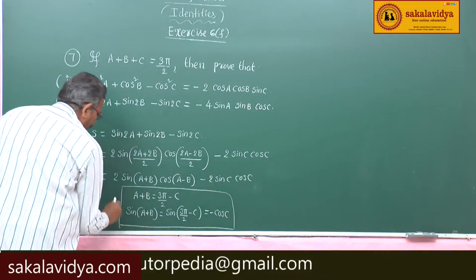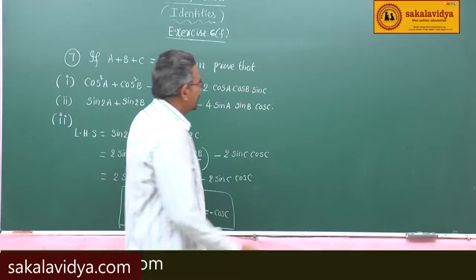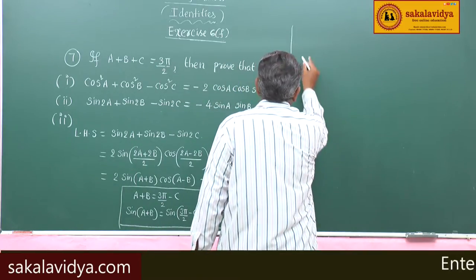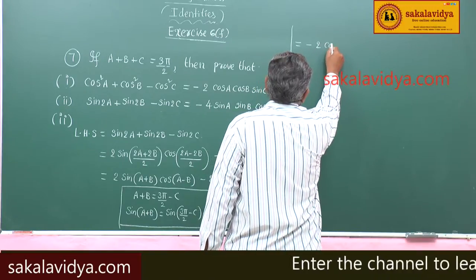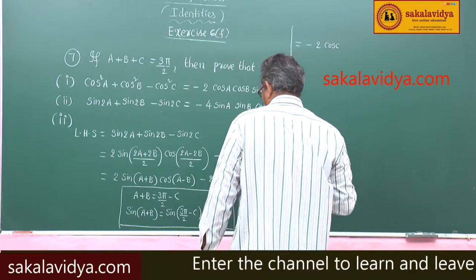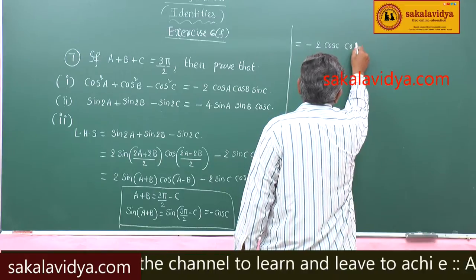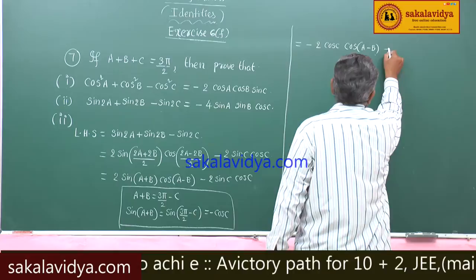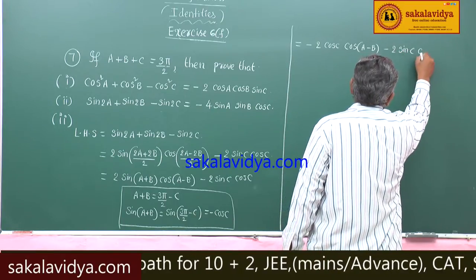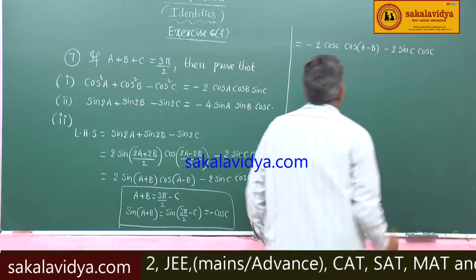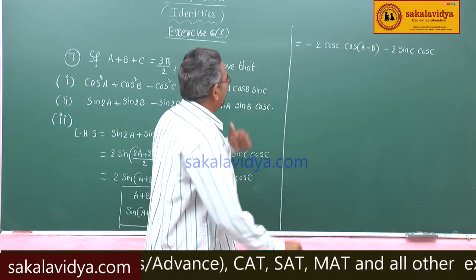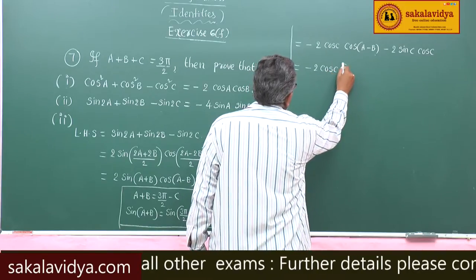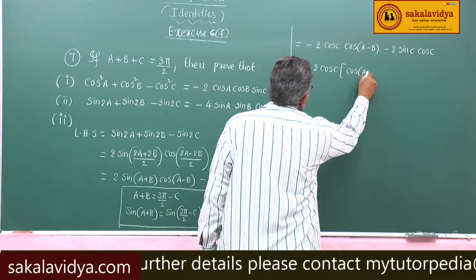Now, sin(a plus b) is replaced by minus cos c. This becomes minus 2 cos c times cos(a minus b) minus 2 cos c. Taking out minus 2 cos c as common, we get minus 2 cos c times [cos(a minus b) minus cos c].